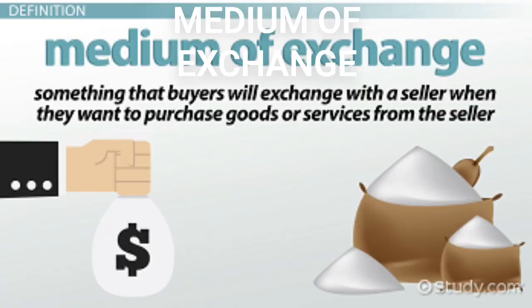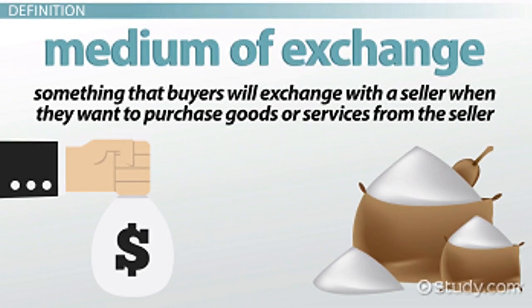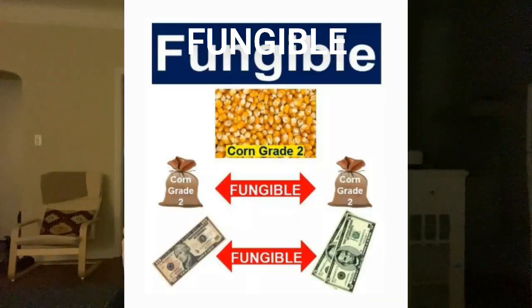Stablecoins are rebranded money. In order to understand stablecoins, we have to understand money. There are a couple of key variables that have to be in place in order for something to be considered money. Money is a medium of exchange — it allows people to obtain what they need to live. It's an intermediate instrument that allows you to obtain the goods that you need to be a human being.